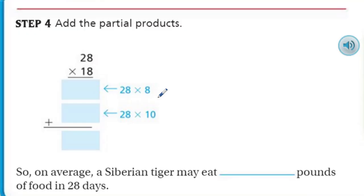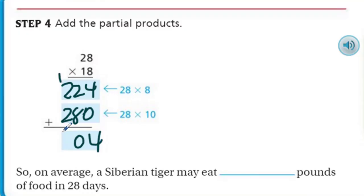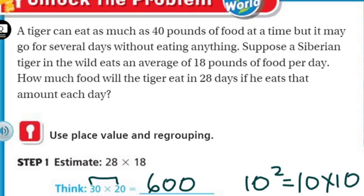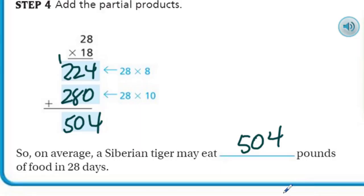Now let's just add the partial products. We had 28 times 8, which was 224, and then 28 times 10, which was 280. We add those together: 4, carry the 1, and we have 504. On average, a Siberian tiger may eat 504 pounds of food in 28 days. That's not super close to our 600 estimate, but we did round up both numbers — 28 rounded up to 30, and 18 rounded up to 20 — so our estimate being higher than the actual answer makes sense.